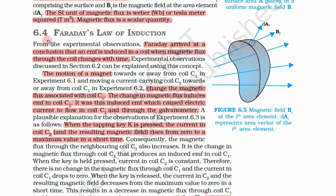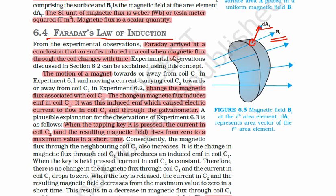We are learning about Faraday's law of induction. We have taken a very small area dA, with magnetic field B going through it, and this vector is normal to that area. Faraday arrived at a conclusion that an EMF is induced in a coil when the magnetic flux through the coil changes with time.